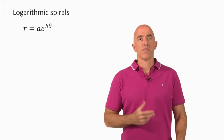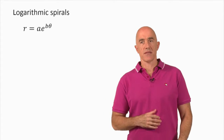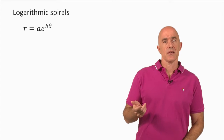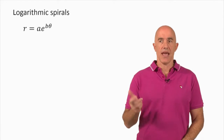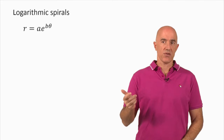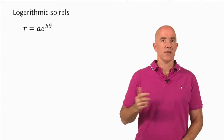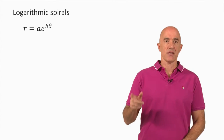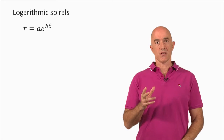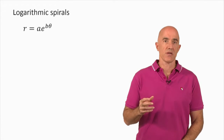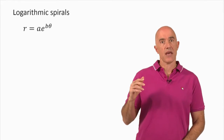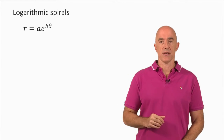The logarithmic spiral has this relationship: the radius r is equal to a constant a times the exponential function e to the b·θ, where θ is the angle. This relationship is written in polar coordinates with the radius r and the angle θ.